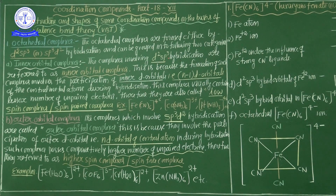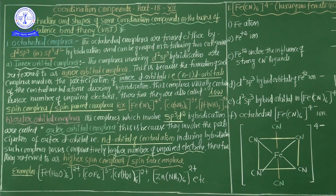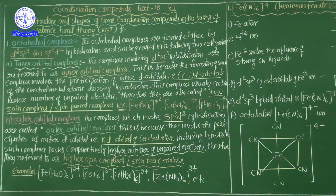In d²sp³ hybridization, the D orbital is involved first; in sp³d² hybridization, the S orbital is involved first. Both have the same orbital components — 2D, 1S, 3P — but the sequence differs. When inner orbitals of the central metal atom are involved, that hybridization is called d²sp³.